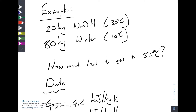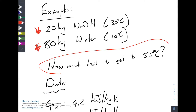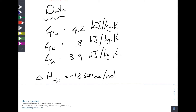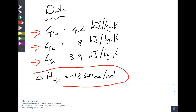The best way to understand this is through an example. We have 20 kg of sodium hydroxide at 30°C added to 80 kg of water at 10°C. The question is: how much heat do we need to add or remove such that the final mixture is at 55°C? The data we need: c_p of water = 4.2 kJ/kg·K, c_p of NaOH = 1.8, c_p of the mixture = 3.9, and the enthalpy of mixing = −12,600 cal/mol for a 20% solution.